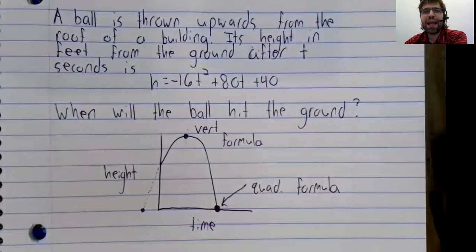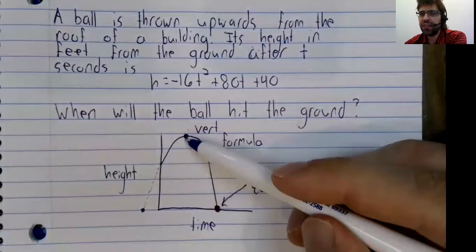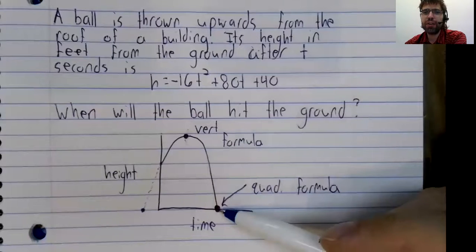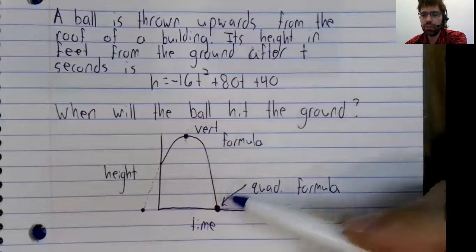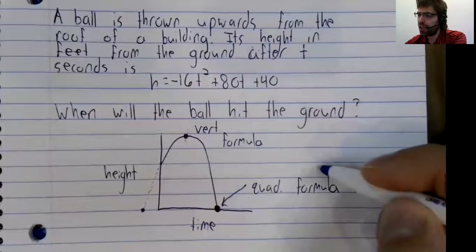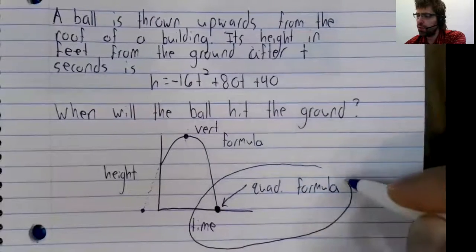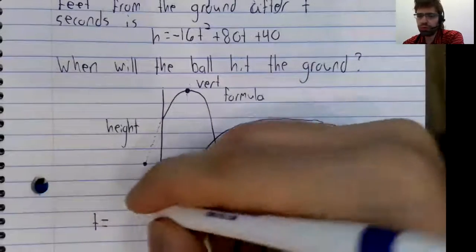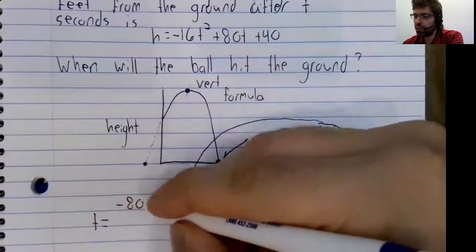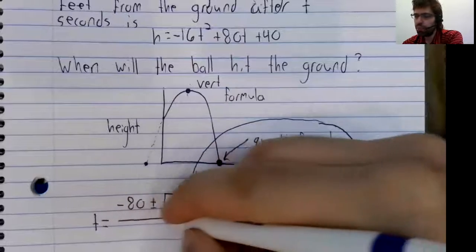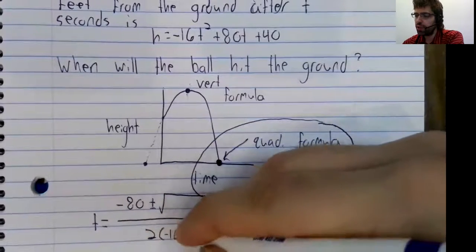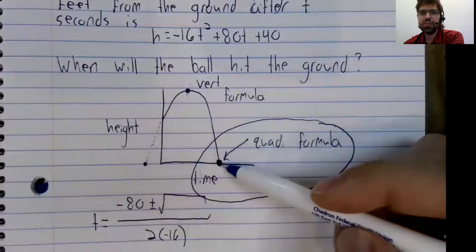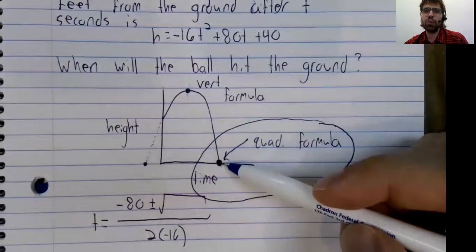So what are we being asked? Are we being asked when the height has reached its maximum value, or are we being asked when the height is zero? Well, the ball hits the ground when the height is zero. So we would use the quadratic formula to find when the height is zero. We'd get two solutions and select the one that makes the most sense.